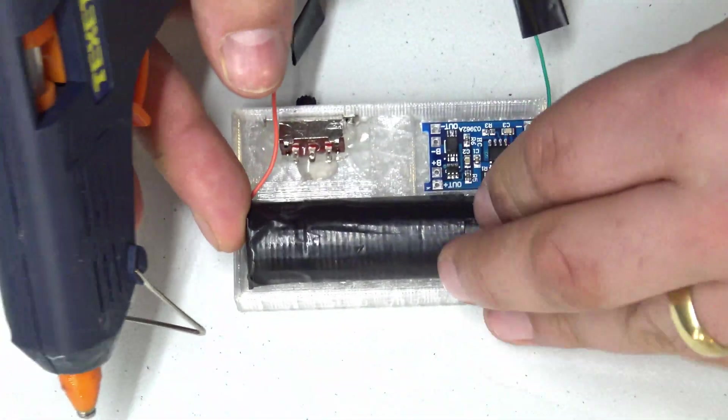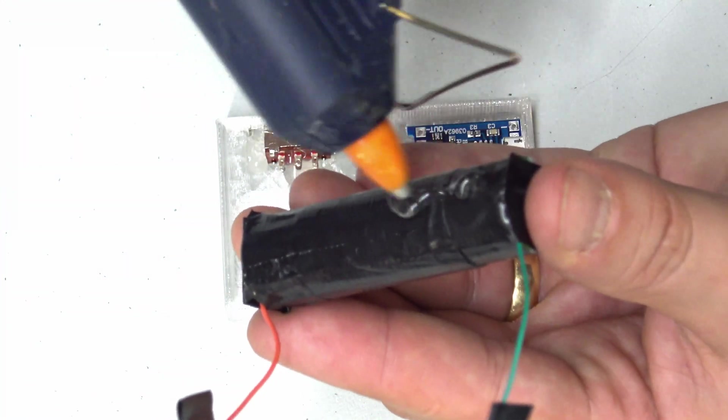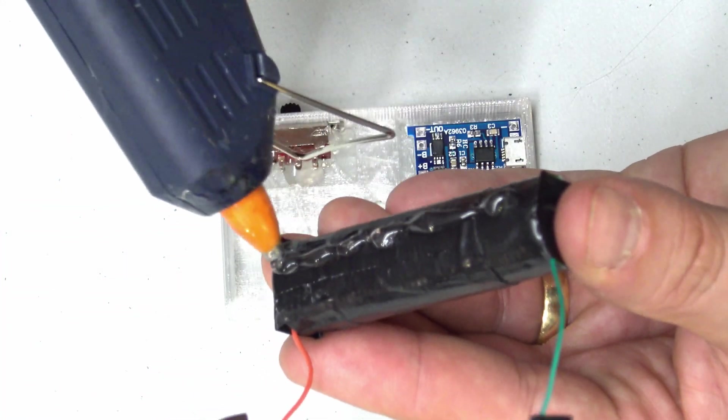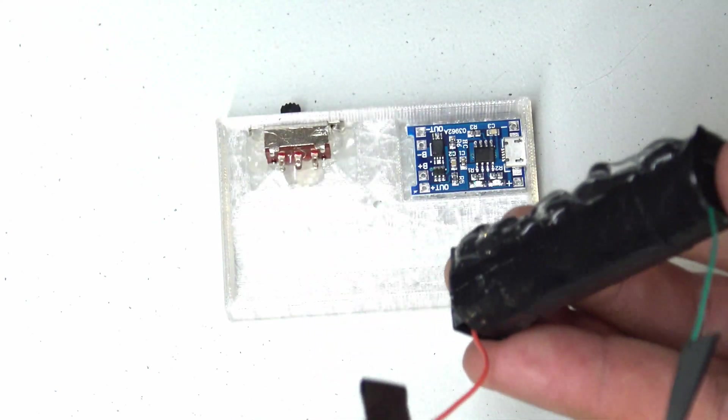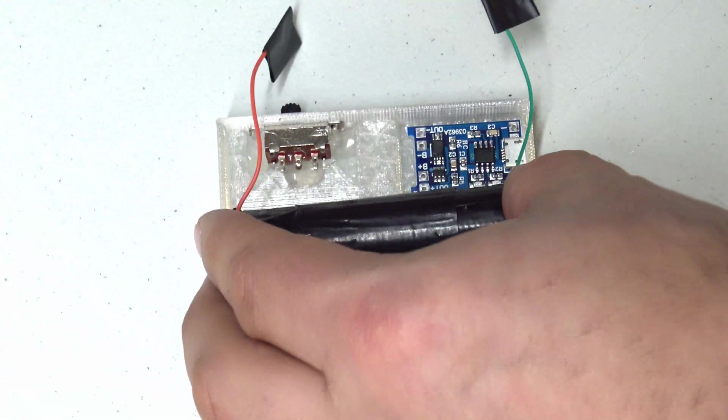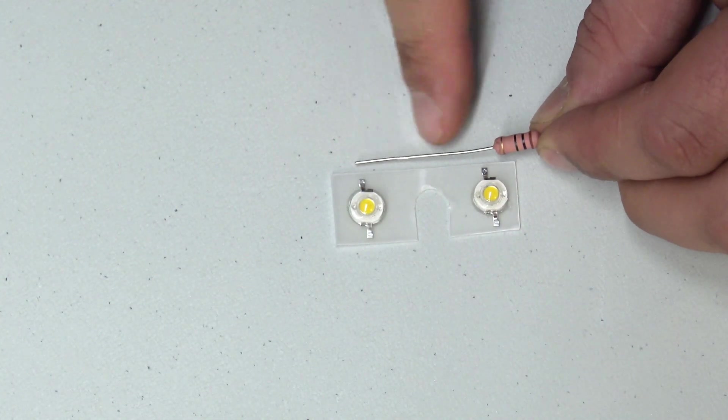And then what you need to do is again using your hot glue gun fit the lithium ion battery in place. The lithium ion battery comes pre-made with cables and protected and the cables are also tweaked so they don't short.